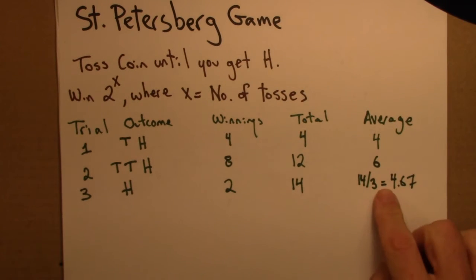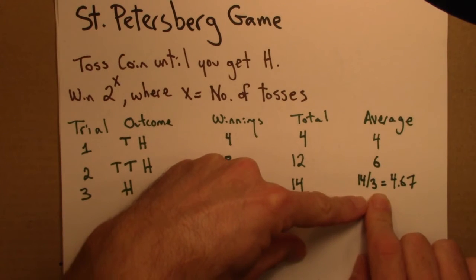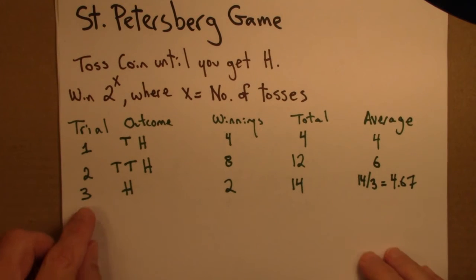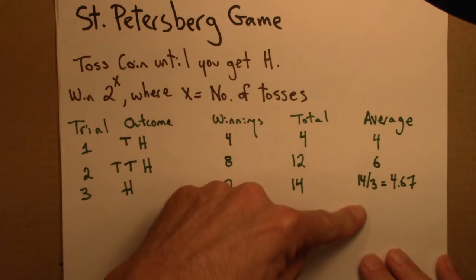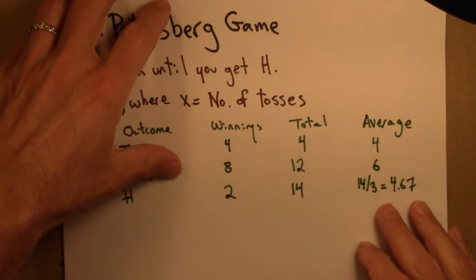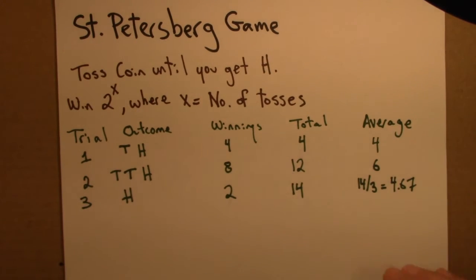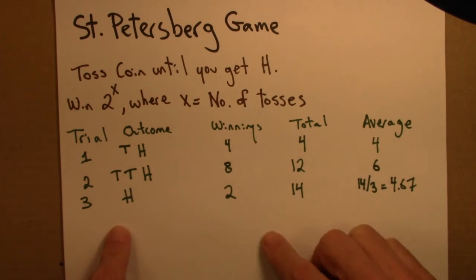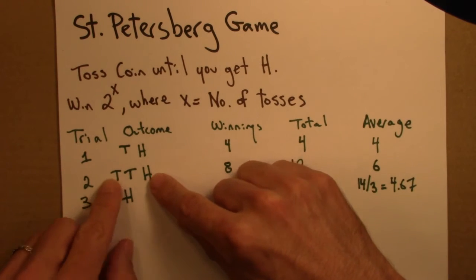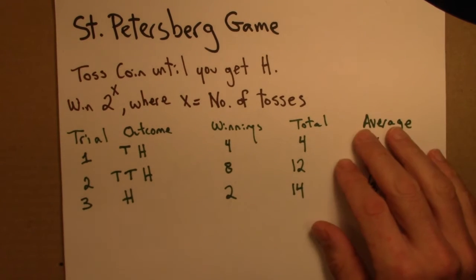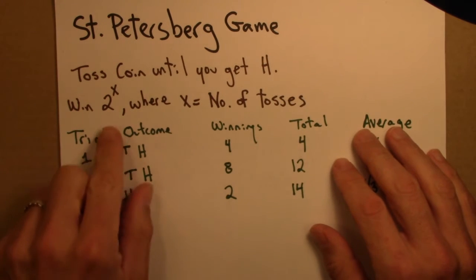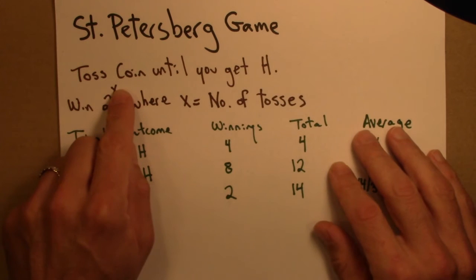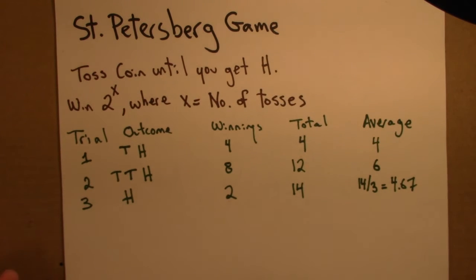The question now is: what are the average winnings for the St. Petersburg game? As I play this again and again — 3 times, 10 times, 100 times, 1,000 times — what does this average get closer and closer to? Most of the time we'll win $2 or $4, occasionally $8. But every now and again there will be a really big payoff. Maybe you happen to get lucky and toss 7 tails and then get a head, so the payback would be 2 to the 8, which is a really big number.